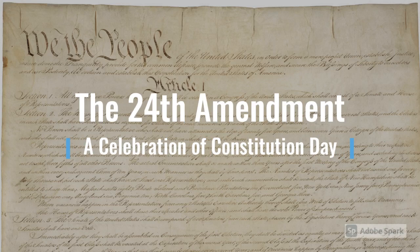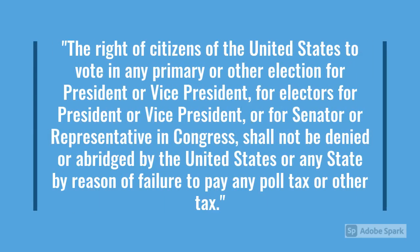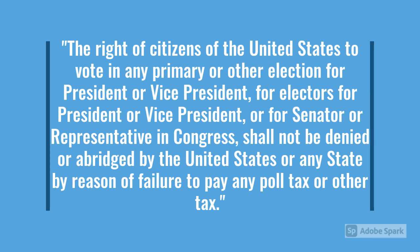The 24th Amendment was passed by Congress in 1962 and ratified by the states in 1964. It says the right of citizens of the United States to vote in any primary or other election for president or vice president, for electors for president or vice president, or for senator or representative in Congress shall not be denied or abridged by the United States or any state by reason of failure to pay any poll tax or other tax.